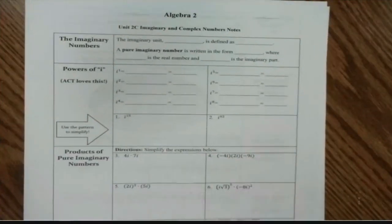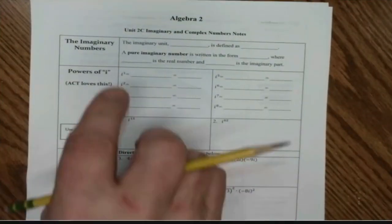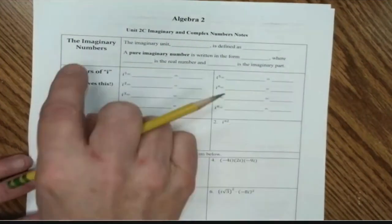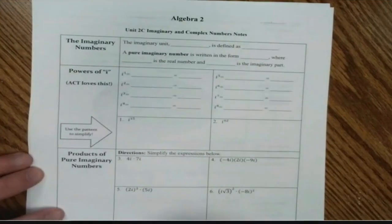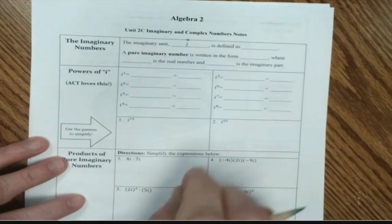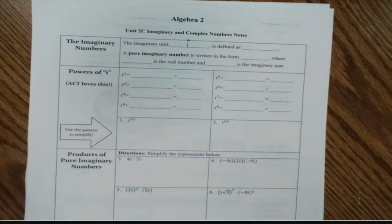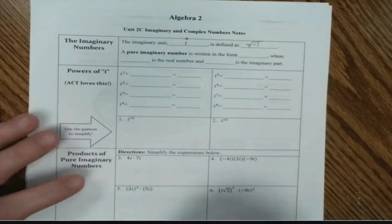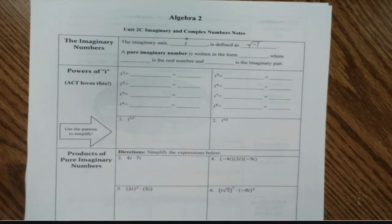Algebra 2, Unit 2C — this is just an add-on to Unit 2 from first semester — imaginary and complex numbers notes. Let's talk about imaginary numbers. The imaginary unit is i. In mathematics, i is a number — it's an imaginary number, but it's a number. It is defined as the square root of negative 1. It's imaginary because we can't take the square root of a negative number; it doesn't exist.